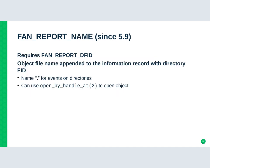The last supplemental information that can be reported is FAN_REPORT_NAME, which requires FAN_REPORT_DFID to also be active. The file name is appended to the directory FID information — for directories it will be just dot, and for files it will be the name in the reported parent directory. You can then use the handle and the name for the open_by_handle_at syscall to open the file that was subject to the event.